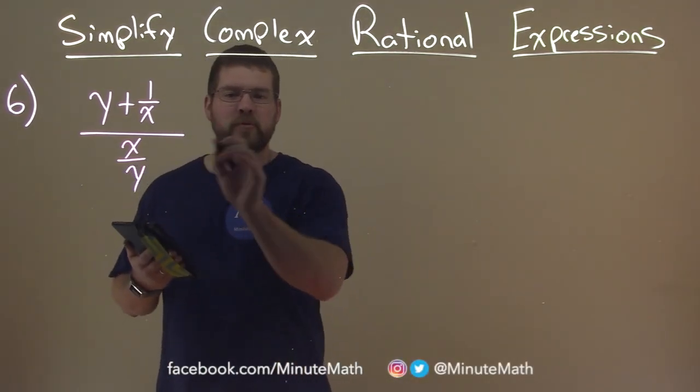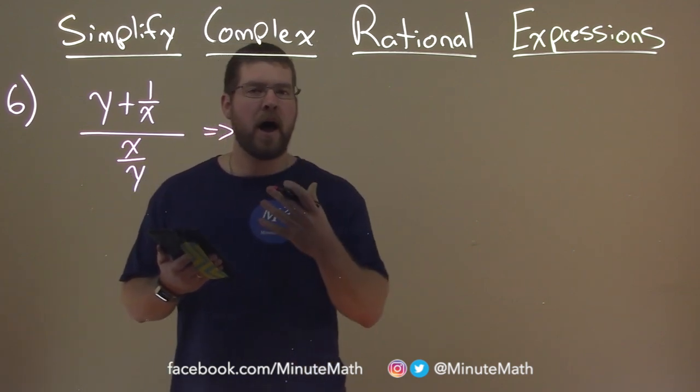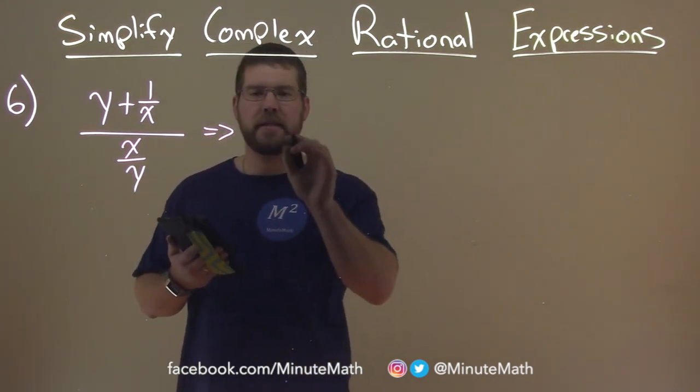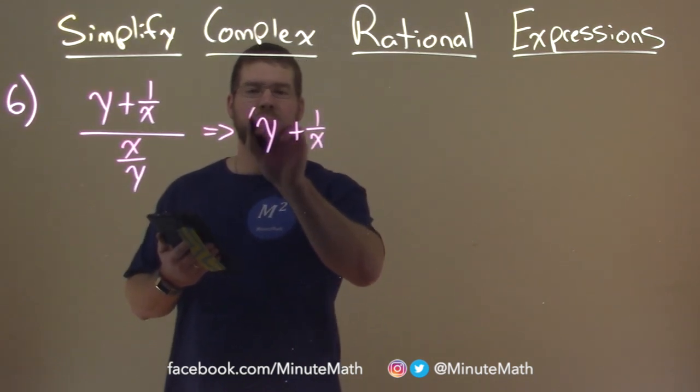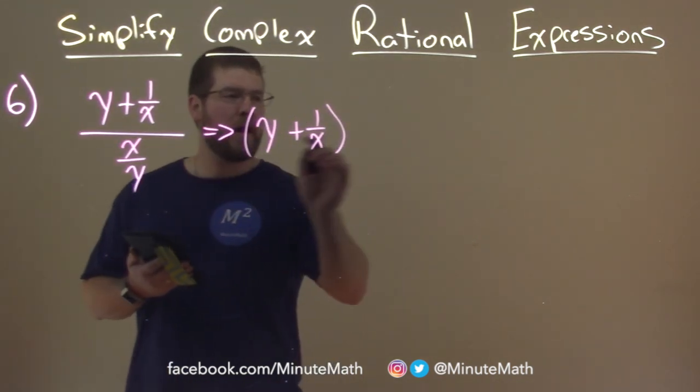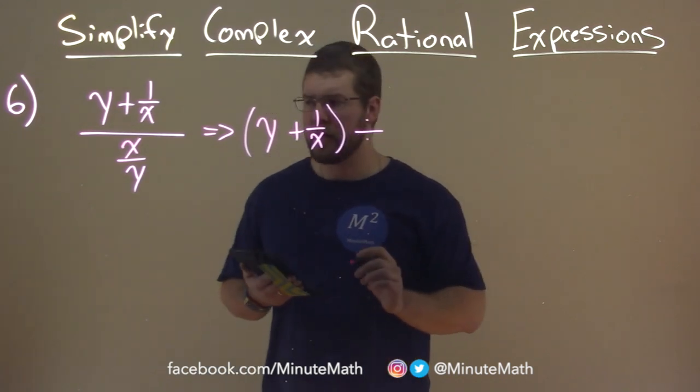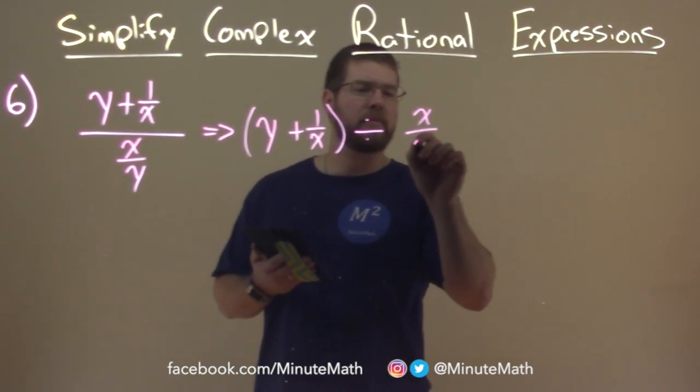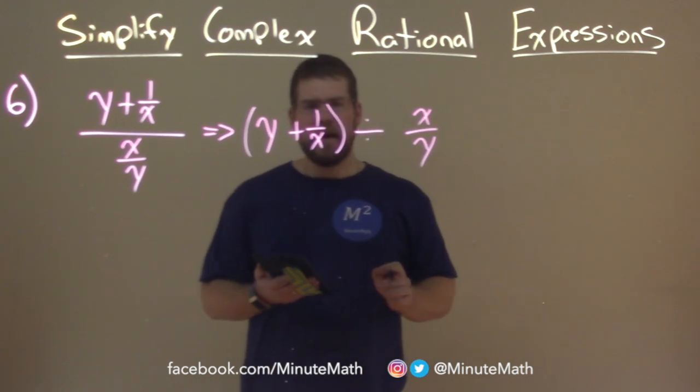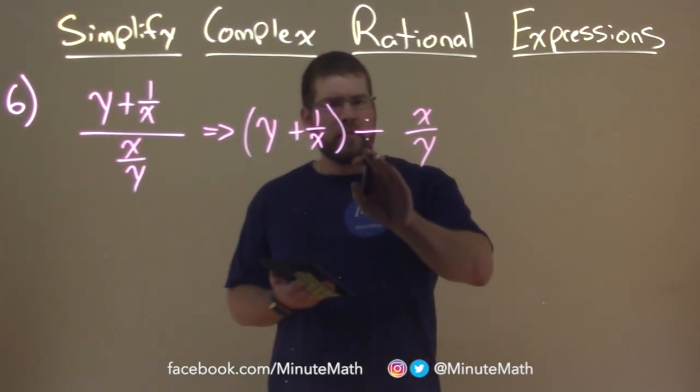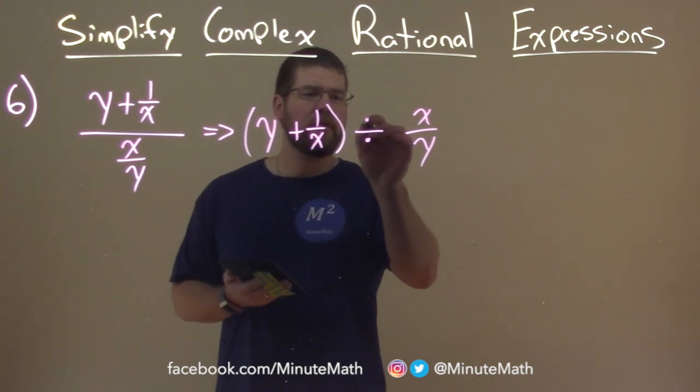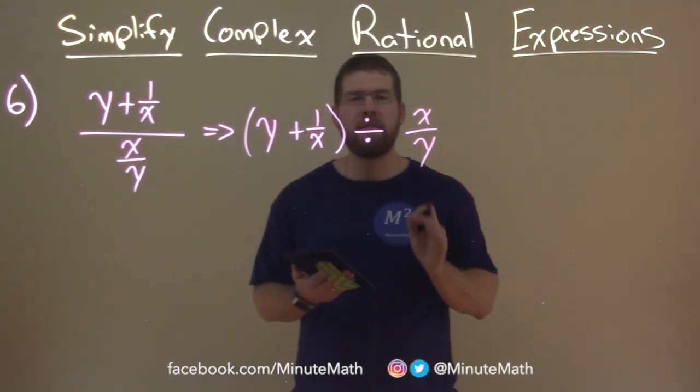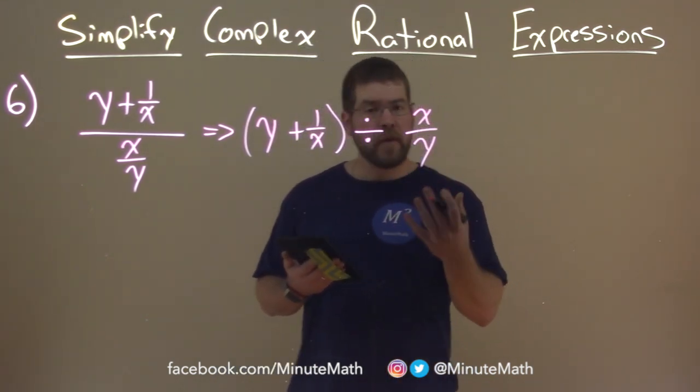All right. What I like to do is rewrite this. And this is my favorite way visually to see this. We have y plus 1 over x, and that divided by sign, I can write as such, divided by x over y. And so now we have it written like this, right? A little easier to see. And the reason why I do that is because I like to convert these to multiplication. I find it so much easier, right? And we've done that before.